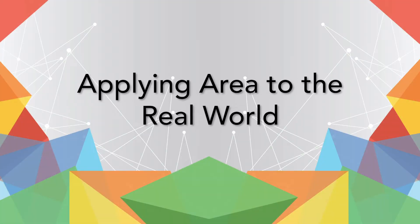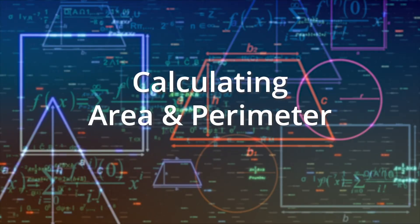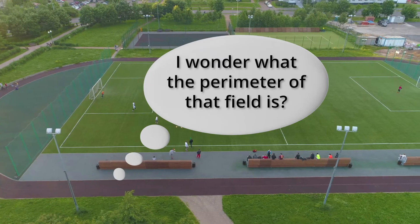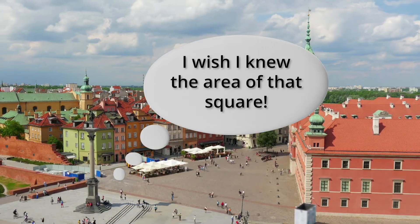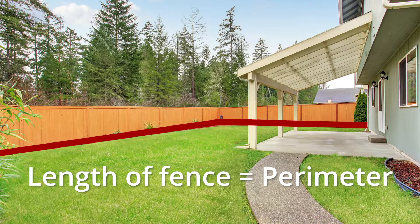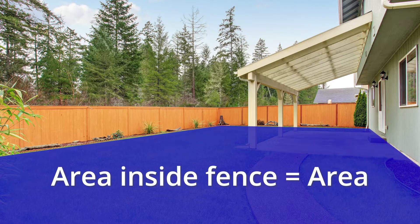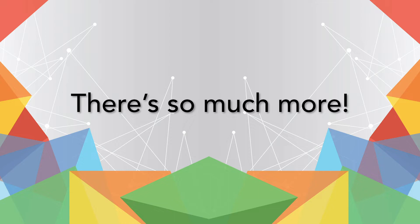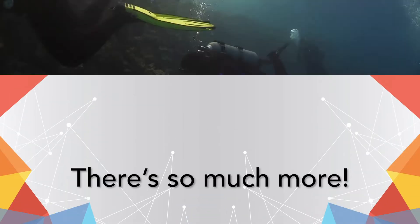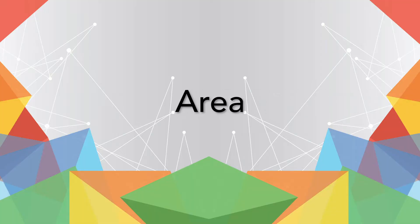Applying area to the real world for kids! Hey kids, you may have seen our video introduction to perimeter and area, in which we explain the basics about those two measurements. In the video, we demonstrate that perimeter is a measurement of the outside line of a shape or space, and area is a measurement of the space inside. But guess what — there's so much more to measuring and understanding area than you might think, and in this video we dive deeper.